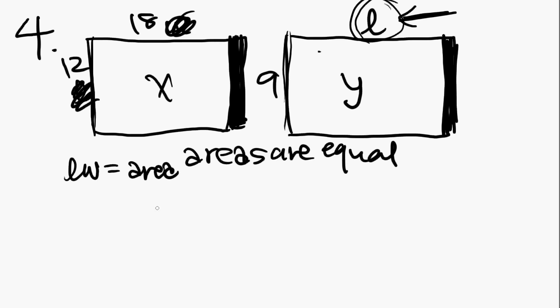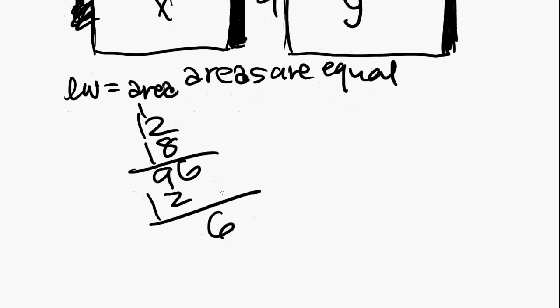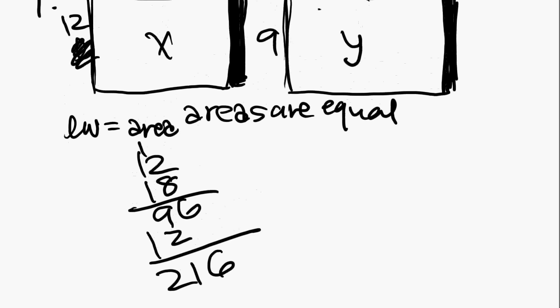Well, we want to find the area first of rectangle X. That would be 12 times 18. 2 times 8 is 16, 8 times 1 plus 1 is 9, 12 times 1 is 12... Let me bring this down a little bit. 6, 9 plus 2 is 11, and you get 216.